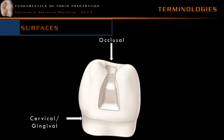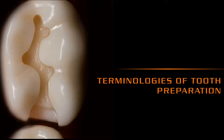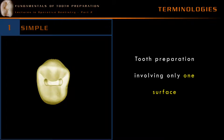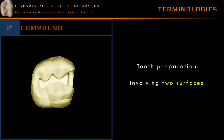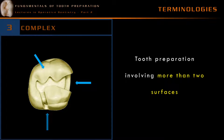We have come to the end of the general terminologies about operative dentistry. Now let's move on to the specific terminologies related to tooth preparation. Tooth preparation in operative dentistry can be considered as a simple tooth preparation, compound tooth preparation, or a complex tooth preparation. A simple tooth preparation involves only one surface of the teeth. A compound tooth preparation involves two surfaces of the tooth. A complex tooth preparation involves more than two surfaces.